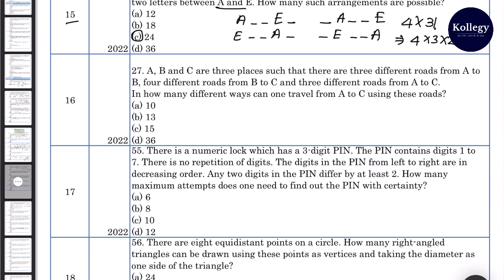Question number 16. A, B and C are 3 places such that there are 3 different roads from A to B, 4 different roads from B to C and 3 different roads from A to C. A se B jane ke 3 raste hain, B se C jane ke 4 raste hain, aur A se direct C jane ke 3 raste hain. So total how many ways from A to C? 15. Option number C.